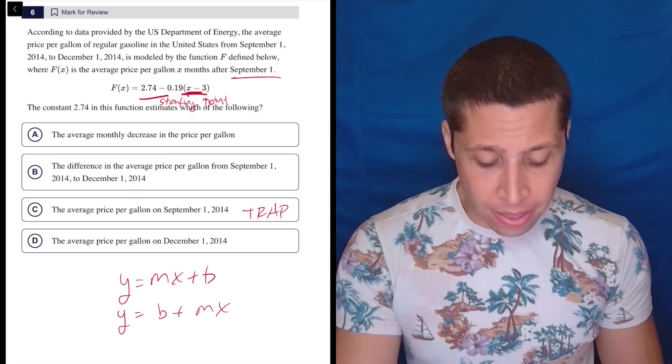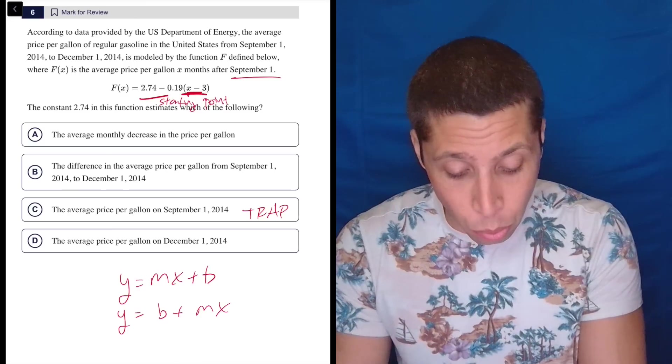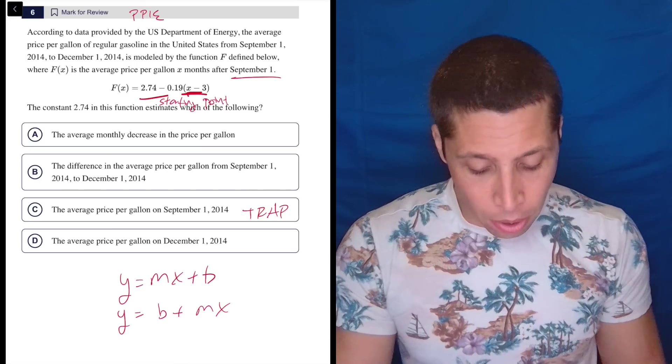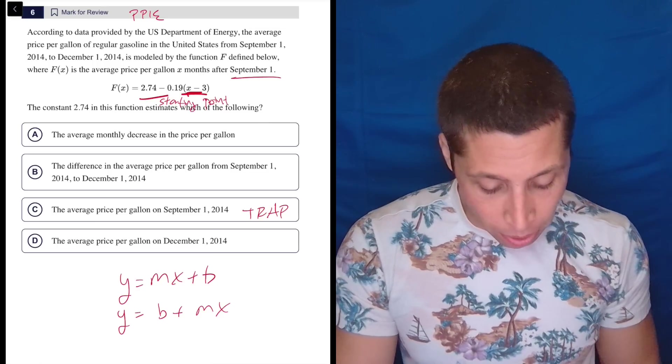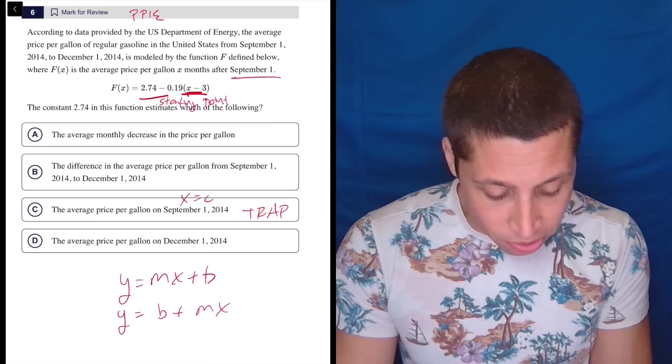So how can we test whether C is the answer? Well, we can recognize that this is a point. We can plug points into equations here and test it out. So if we tried, if we thought C was the answer, we would say that, okay, that's when x is equal to 0.